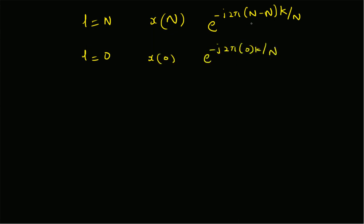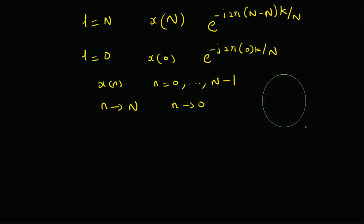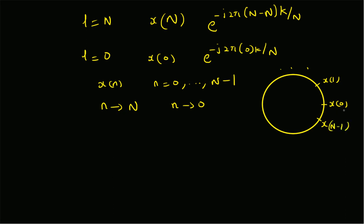We argue these two terms are equivalent because the sequence x[n] has indices from n=0 to N-1. When n becomes N, it is equivalent to n=0. You can visualize this by imagining the numbers stored on a circle: x[0], x[1], and so on up to x[N-1]. If you go to x[N], you are restarting the circle, so x[N] equals x[0].